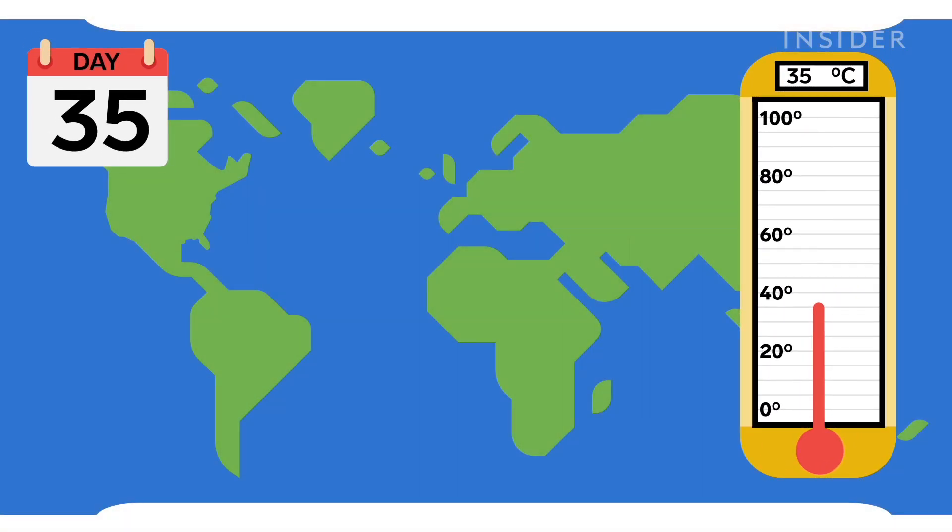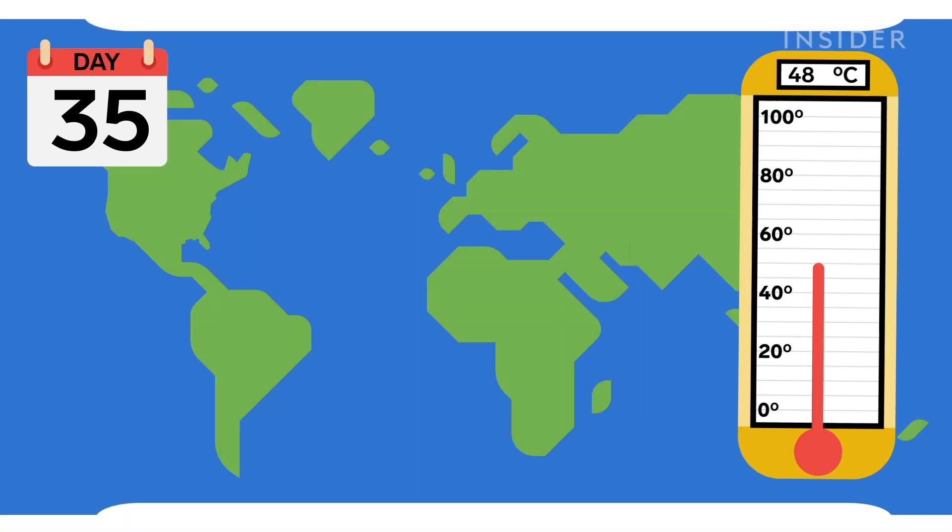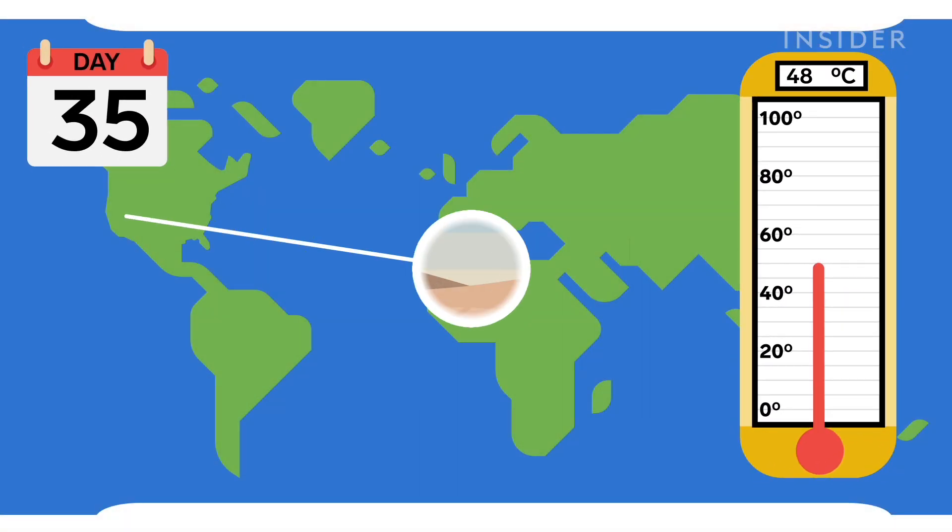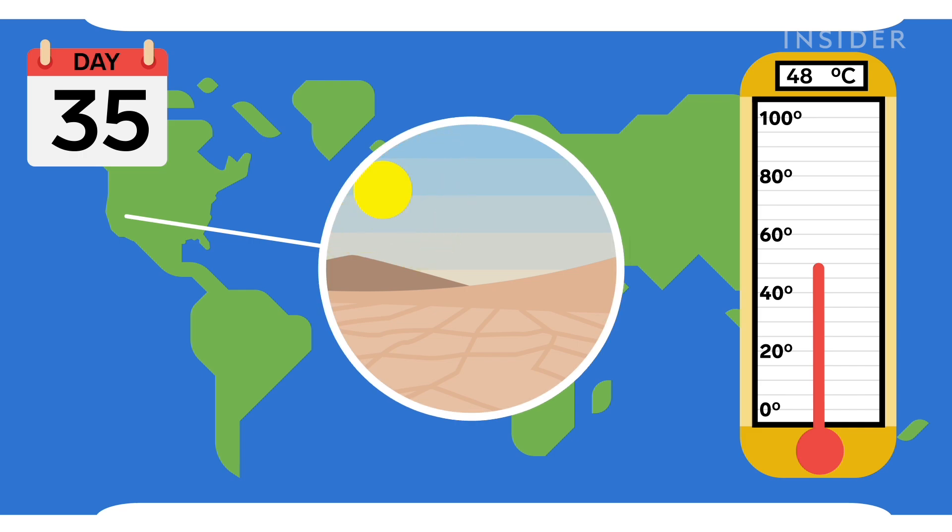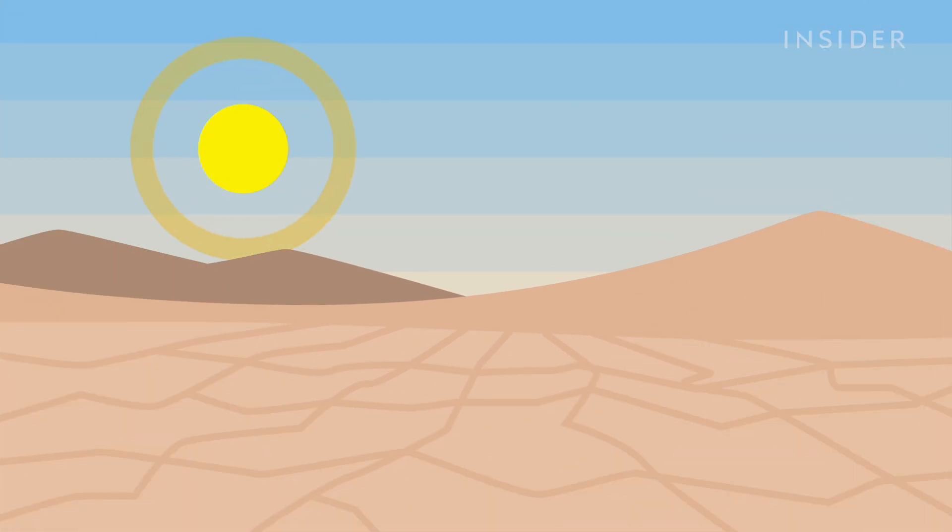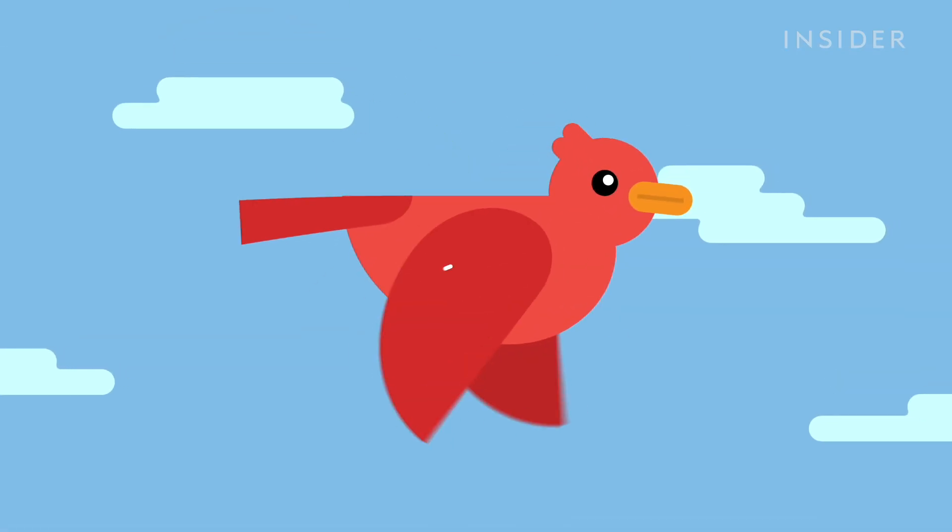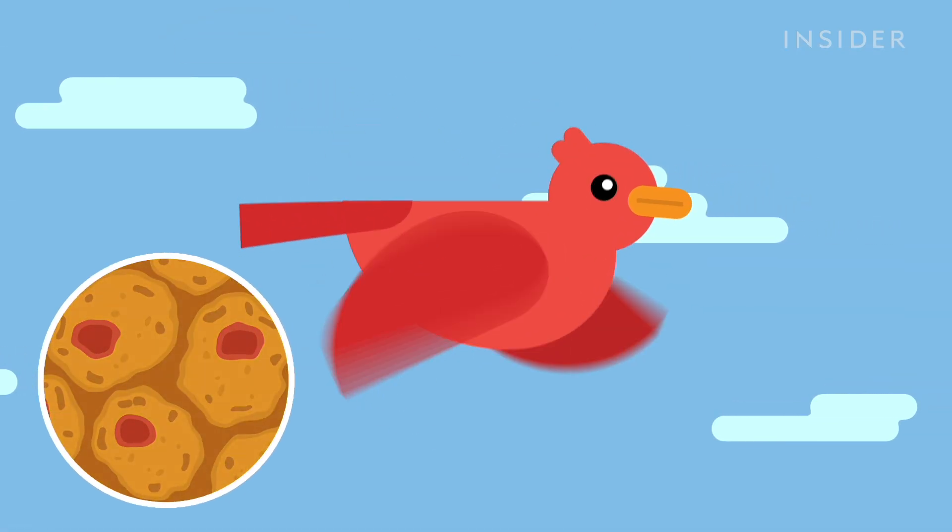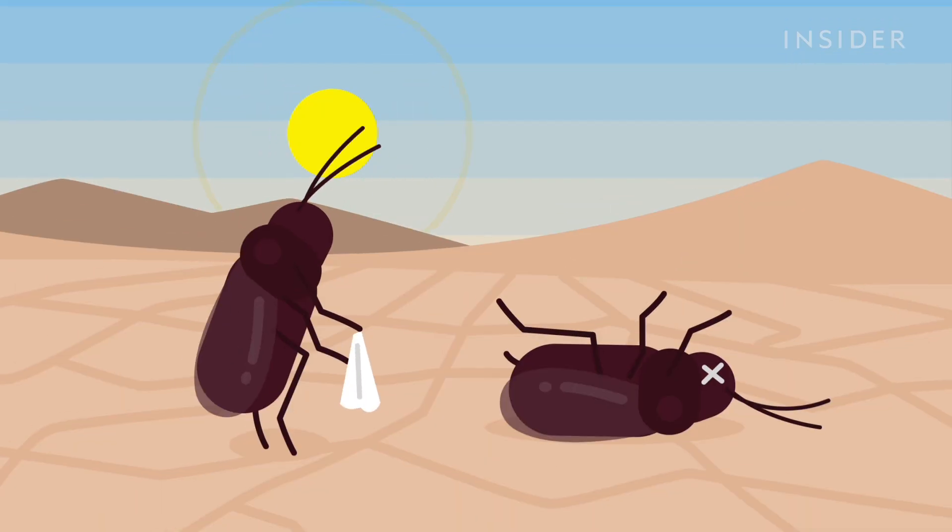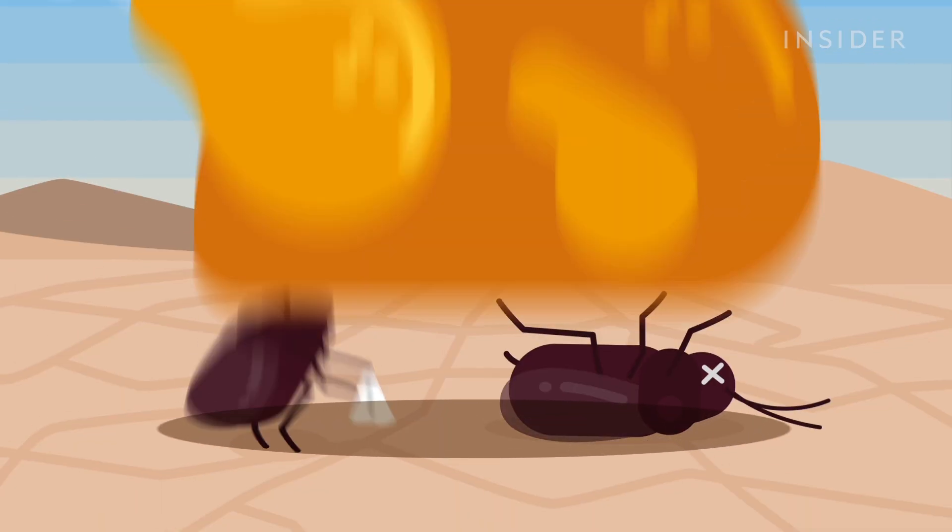By day 35, global temperatures will reach 48 degrees. That's as hot as an average summer day in Death Valley, one of the hottest places on Earth. Most mammals, birds, and insects die as the proteins that make up their cells start to cook. Yes, even roaches can't withstand this apocalypse.